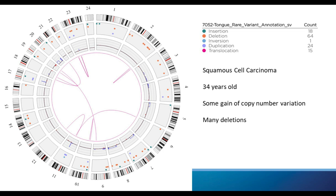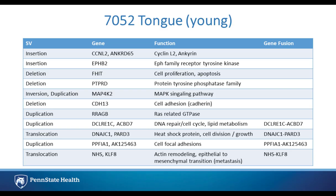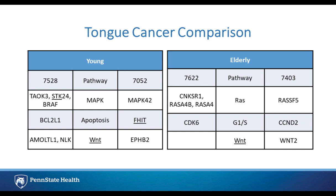The next young tongue cancer patient is a 34-year-old, and this one has quite a rich number of deletions populated throughout the genome — in chromosomes 2, 3, and throughout. There's also a significant increase in copy number in chromosomes 3 and 4. For this patient, we see involvement in different pathways including a deletion in FHIT involved in apoptosis, an inversion-duplication involving MAP4K2 in MAP kinase signaling, and a duplication involving RIAGB in RAS signaling.